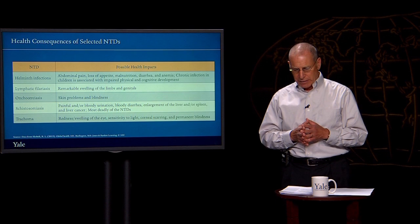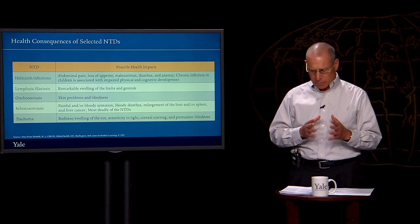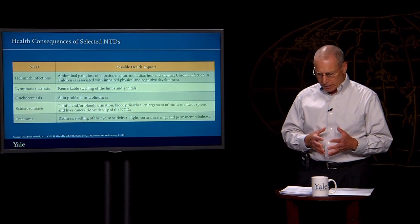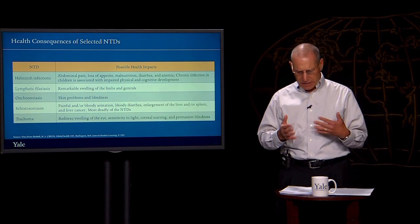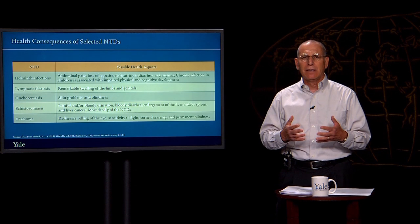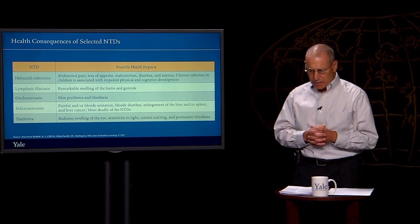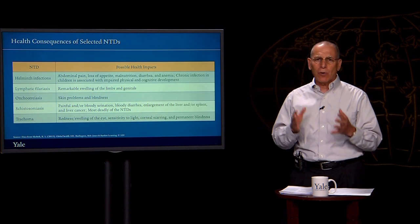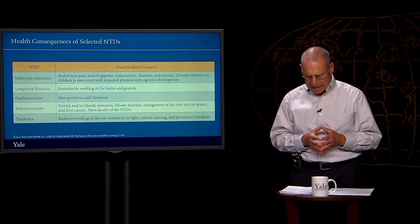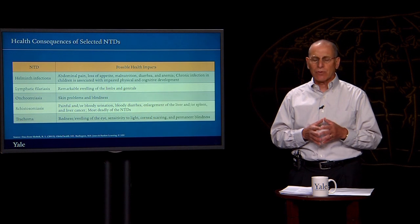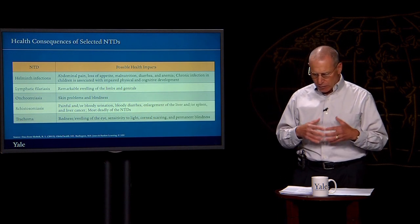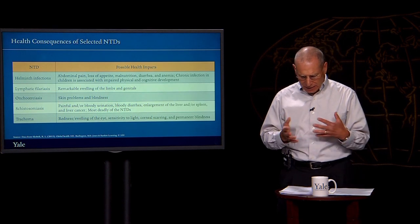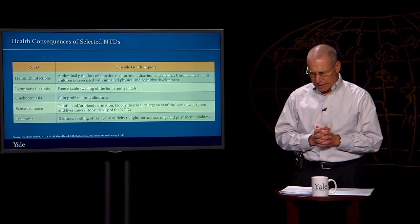Another principle is to provide treatment on the basis of a map of the diseases that are endemic to an area. Earlier, different NTDs were usually targeted through separate programs. The idea now is to address NTDs through a coordinated rapid impact package, in which drugs are given out in a coordinated program at the community level, depending on the disease burden in a particular place.